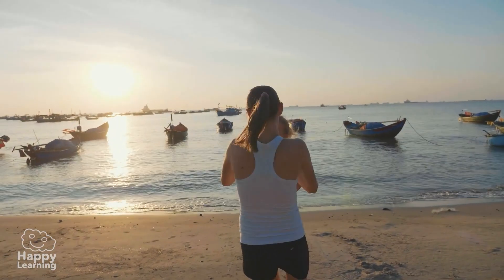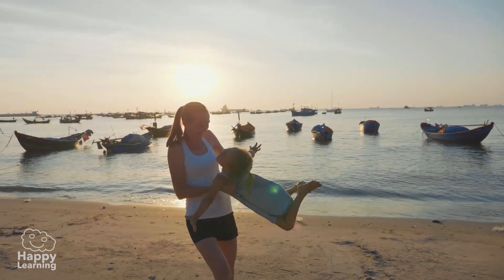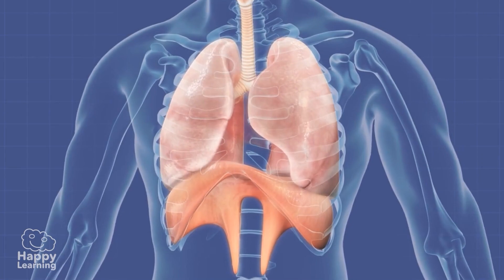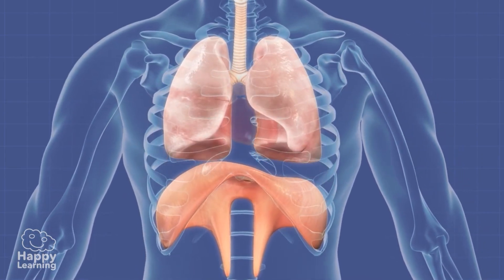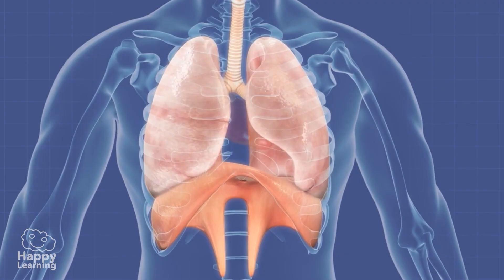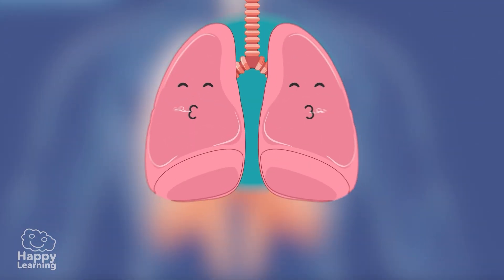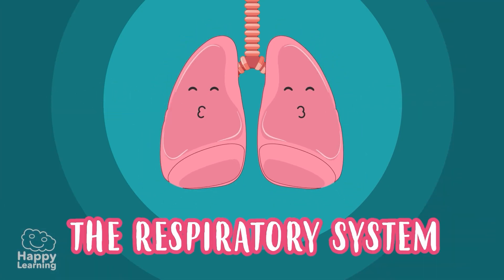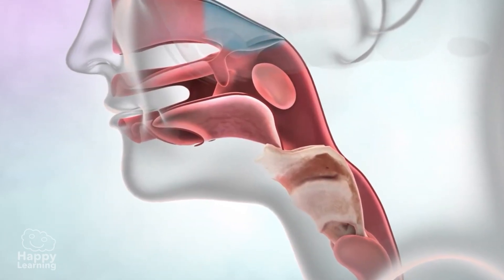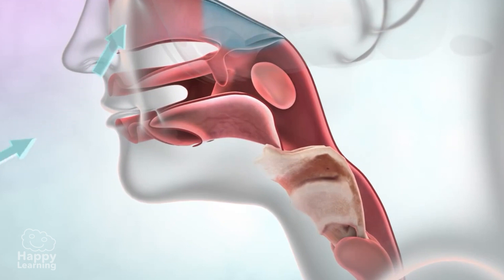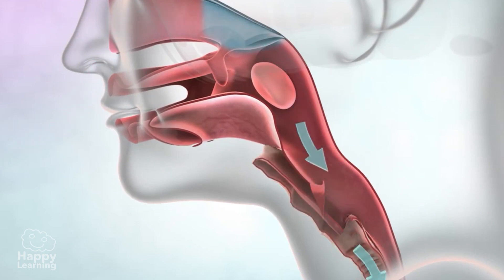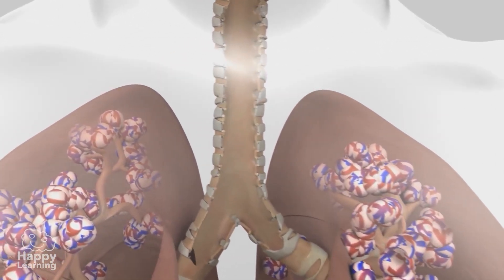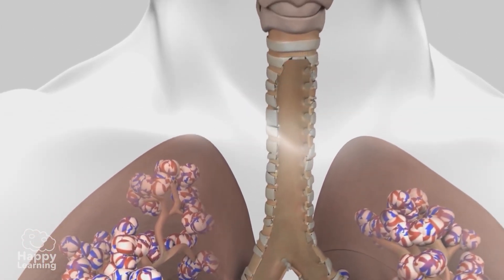Hello friends. We all know that in order to live we have to breathe, and to carry out this very important function we use the respiratory system. Breathing is an involuntary process that we do without realizing, but we can control it. Today we're going to find out what breathing consists of and how the respiratory system works.